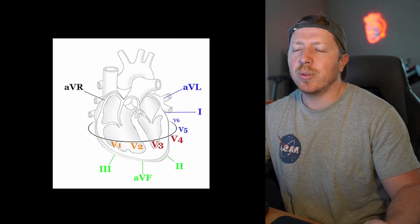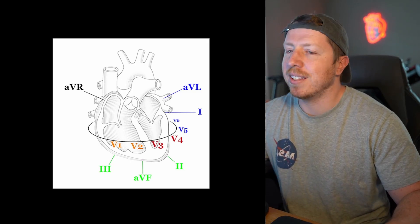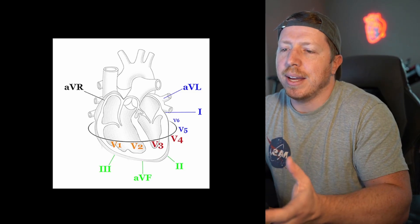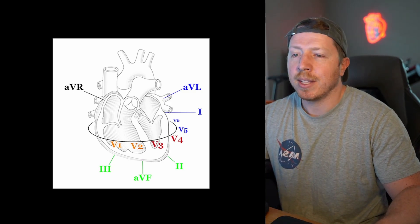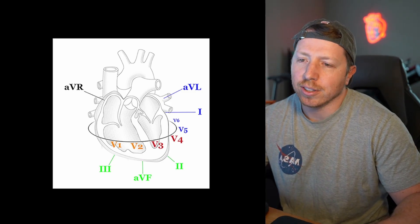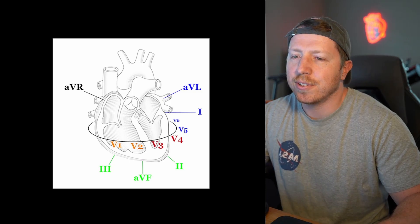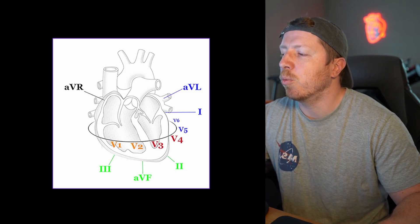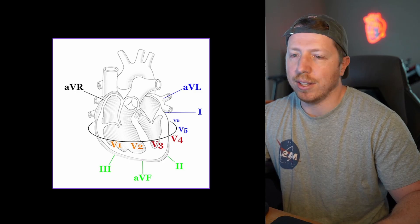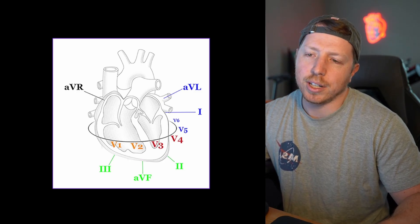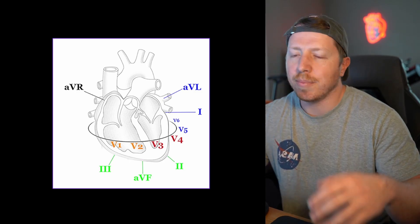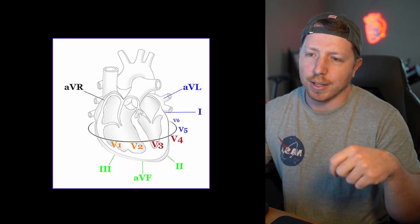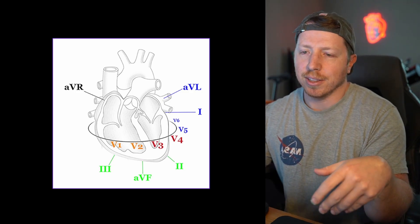The only thing you really need to memorize is the locations of the leads in space around the heart. We'll start first with our limb leads — I, II, and III — which are made up from the limb electrodes placed on the patient's arms and legs. Lead I looks at the lateral aspect, or the left side of the heart. We continue clockwise to find the rest of the leads.